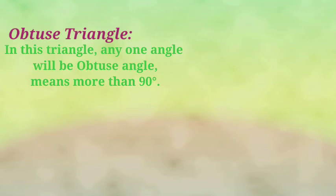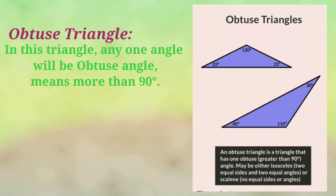The next triangle is Obtuse Triangle. In this triangle any one angle will be Obtuse Angle means more than 90 degrees.